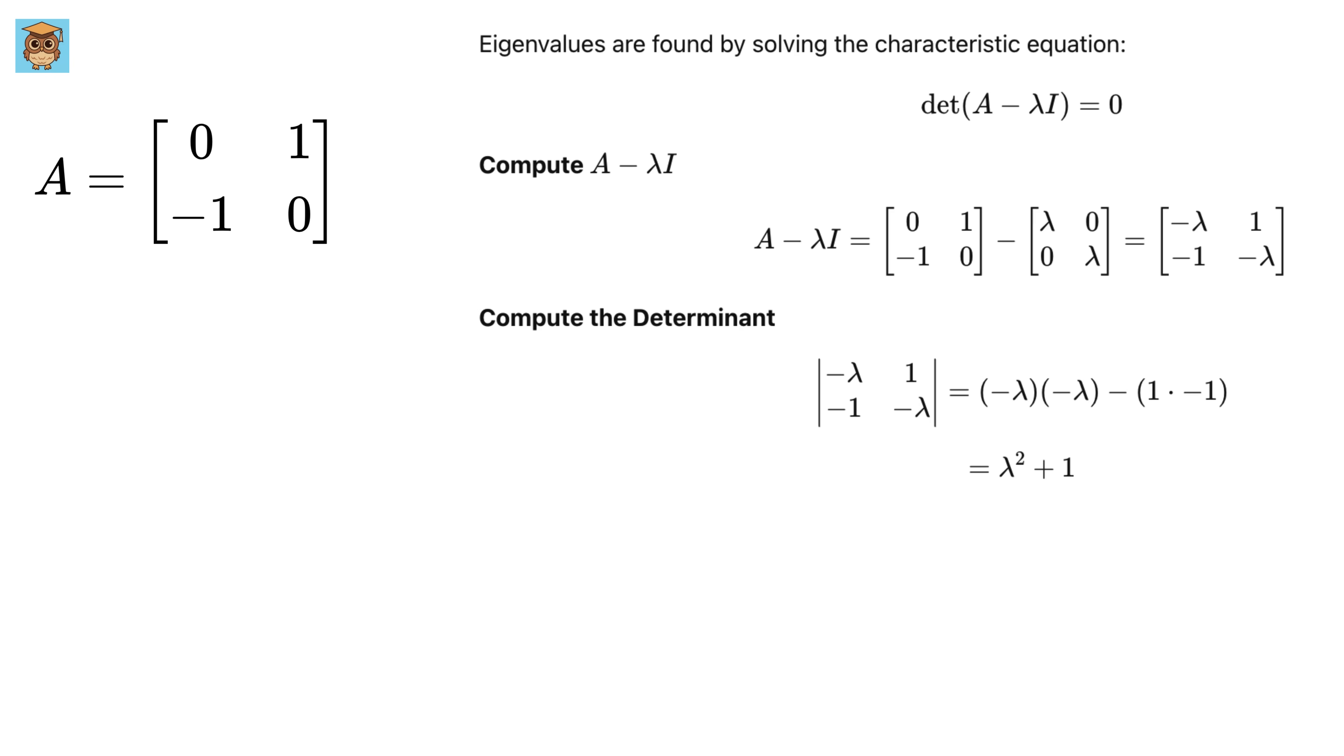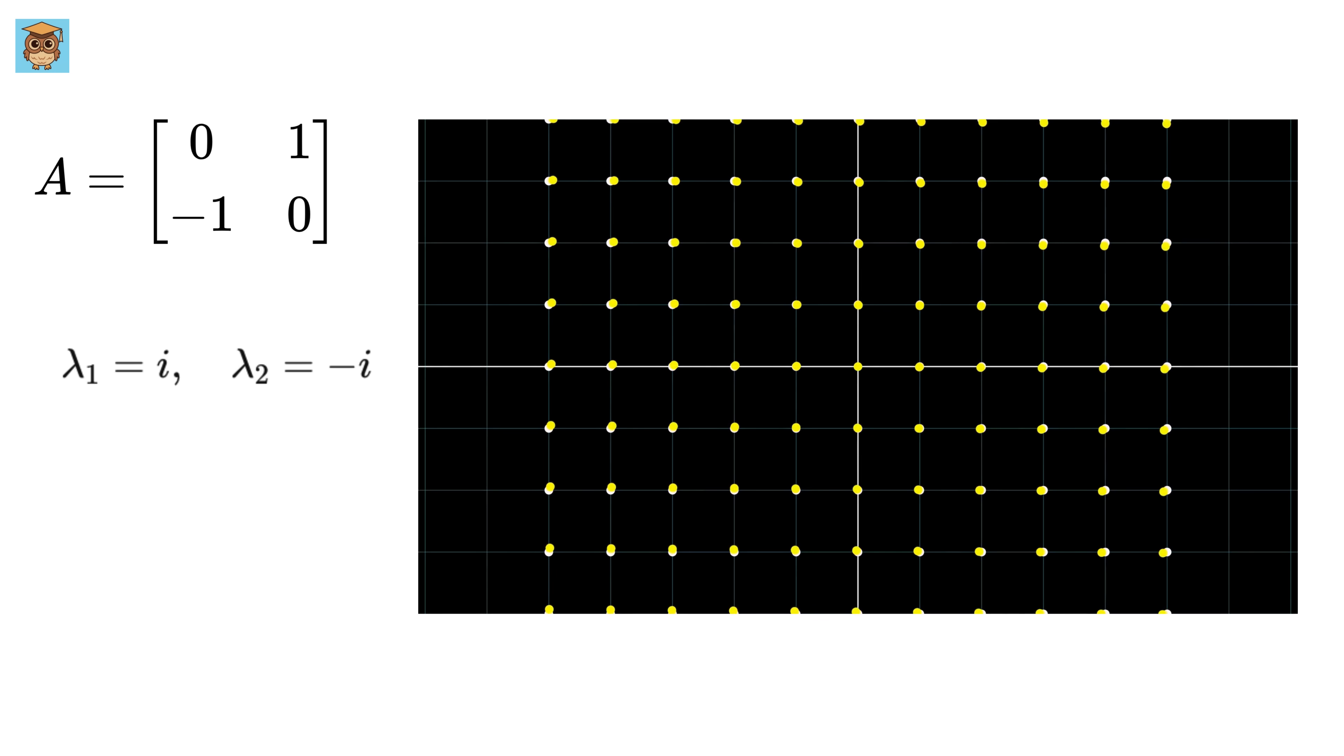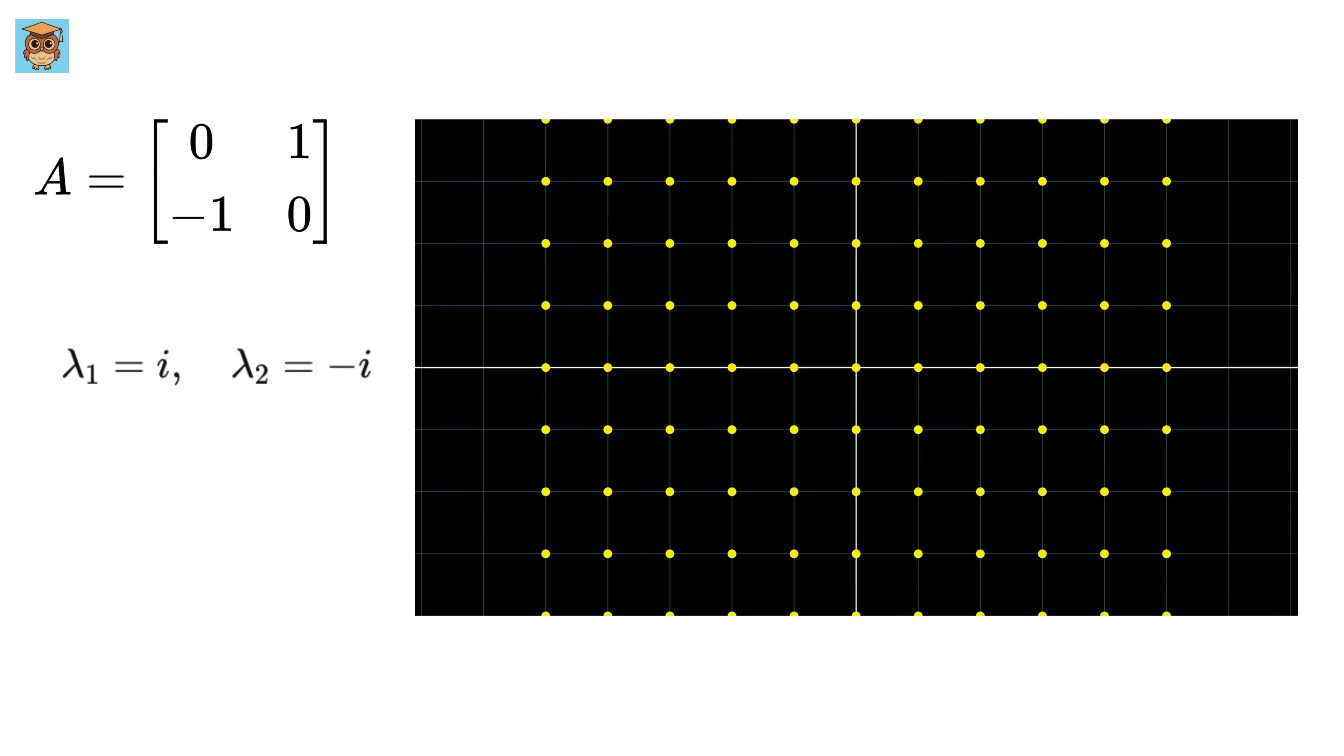But there is no real number that satisfies this equation. This means that there are no real eigenvalues, and that tells us something interesting. There is no real direction that remains fixed under this transformation. Instead of stretching or compressing vectors along a particular line, the transformation rotates everything. This is a huge difference compared to what we saw earlier.